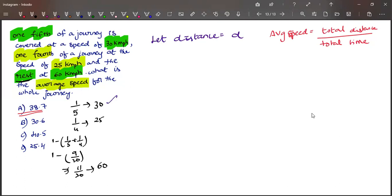Come to the first part of the journey. It covered one fifth of the distance at 30 kilometers per hour, but we don't know how much time was taken, so let the time be t1. In the first case, it covered one fifth of the distance in time t1 at speed 30 kilometers per hour, which means t1 equals D by 150.